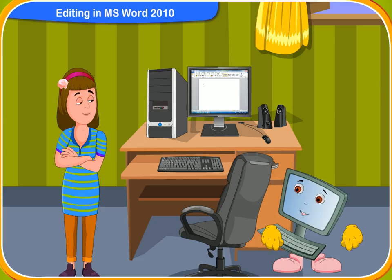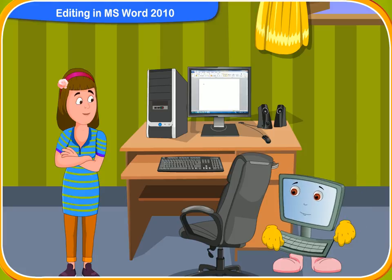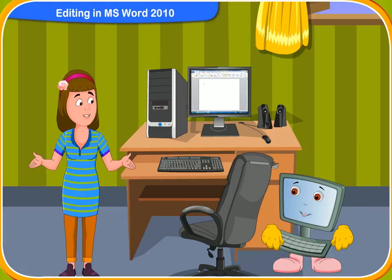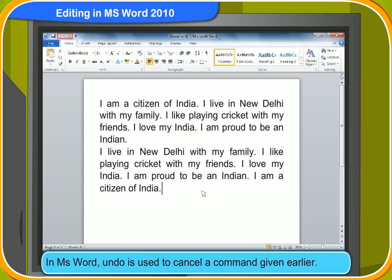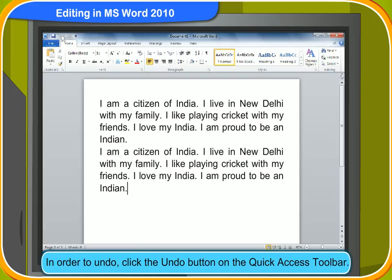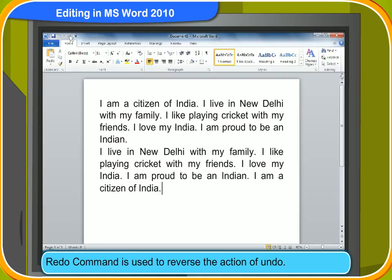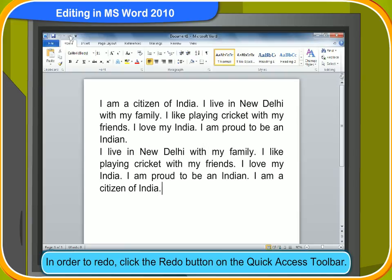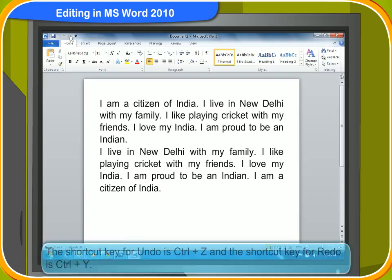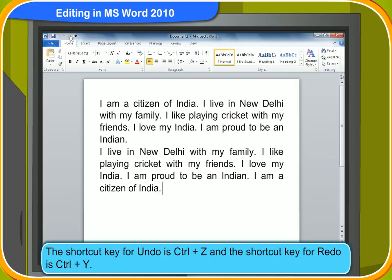Rennie, do you know how to undo or redo an action in MS Word? No, Clicko. Tell me how to do it. In MS Word, undo is used to cancel a command given earlier. To undo, click the undo button on the quick access toolbar. The redo command is used to reverse the action of undo. To redo, click the redo button on the quick access toolbar. The shortcut key for undo is Ctrl+Z and the shortcut key for redo is Ctrl+Y.